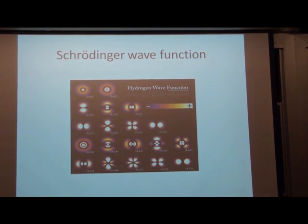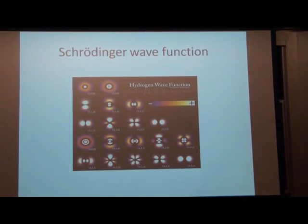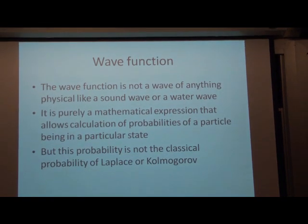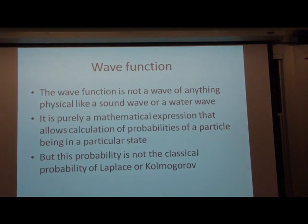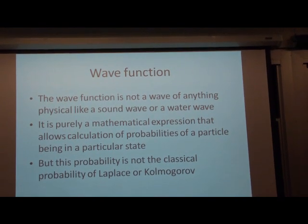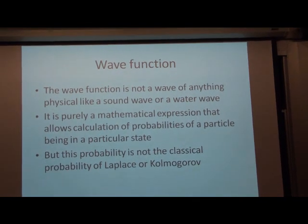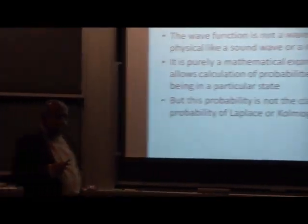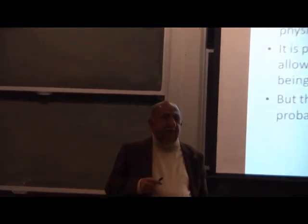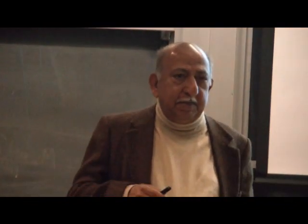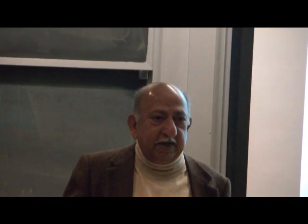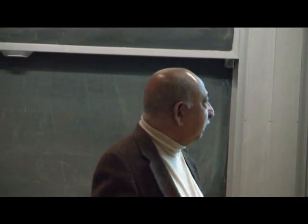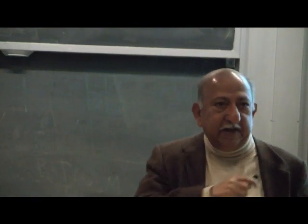Please note that these hydrogen wave function images are simulations — we don't see them at the level of the hydrogen atom. The wave function is not a physical wave like a sound wave, a seismic wave, or anything like that. It is a mathematical expression that allows calculation of properties of a particle being in a particular state. It's a complex number, and the probability is calculated by multiplying the complex quantity by its conjugate. This probability is not the classical probability of Laplace and Cournot's law, which we already saw.